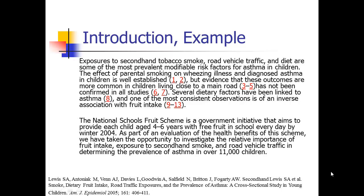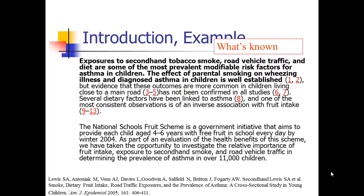This was about potential risk factors for asthma. They start with the what's known and jump right into their question of interest — notice they don't say 'asthma is an important problem, it affects a lot of children.' They jump right into what's known about their question of interest: exposures to secondhand tobacco smoke, road vehicle traffic, and diet are some of the most prevalent modifiable risk factors for asthma in children. The effect of parental smoking on asthma is well established.